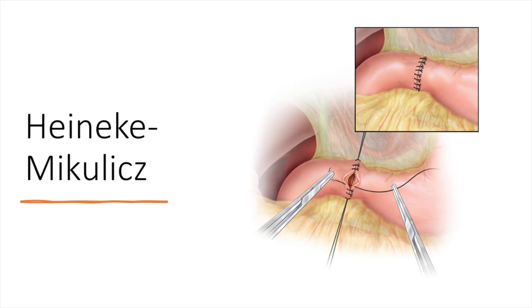The most common technique is called the Heineke-Mikulicz pyloroplasty. This is the simplest and most commonly performed technique. The pyloric sphincter is divided longitudinally — a longitudinal cut is made — and then it's closed transversely, effectively widening the opening of the pyloric region. By inverting the closure from longitudinal to transverse, you widen the opening so gastric contents can pass from the antrum through to the duodenum.